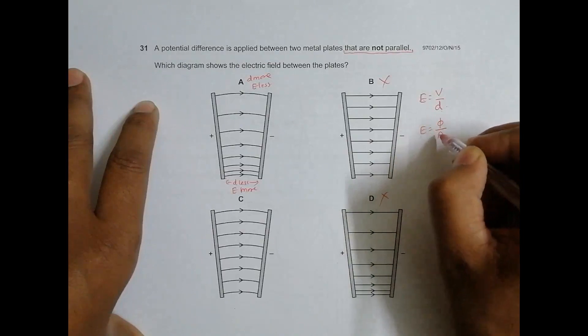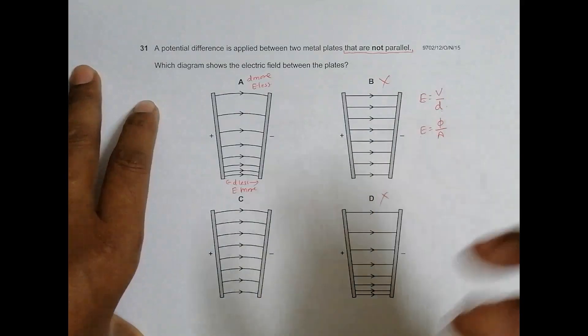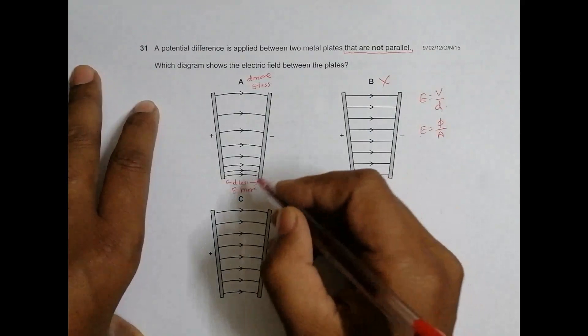E more means that the flux density is more, which means flux is more in a certain area. Flux more means lines of force should be more in that region.